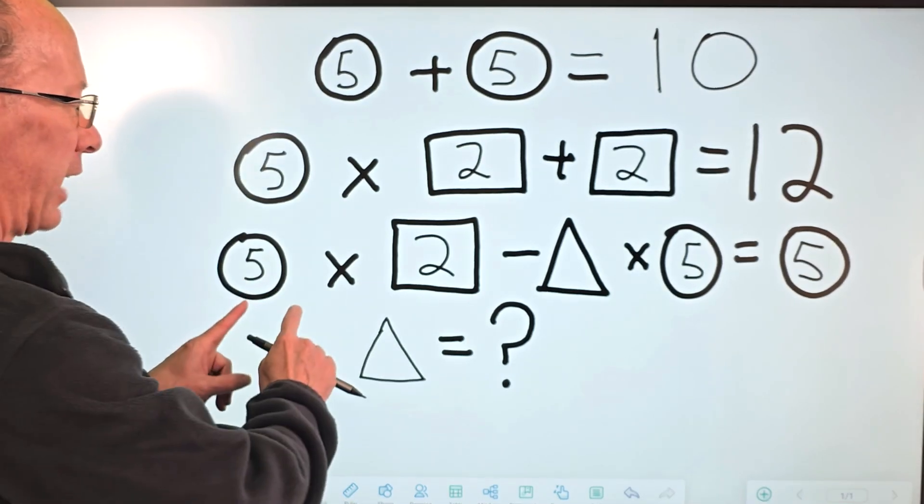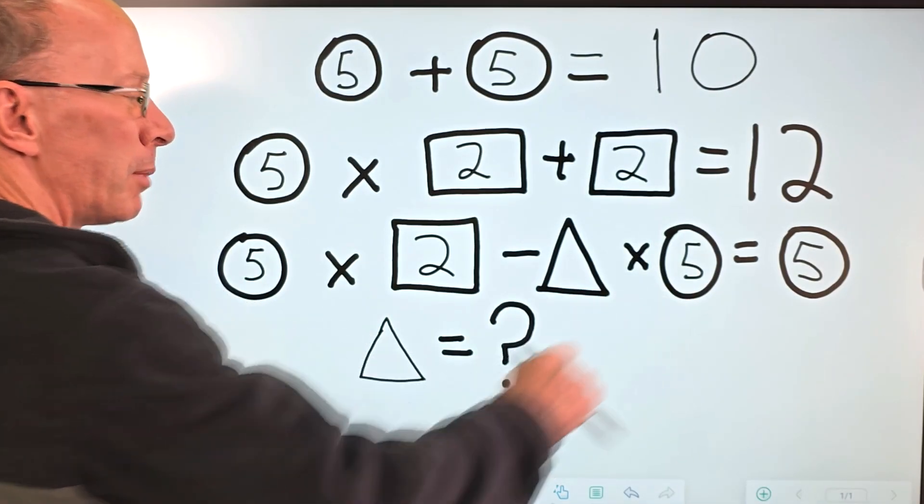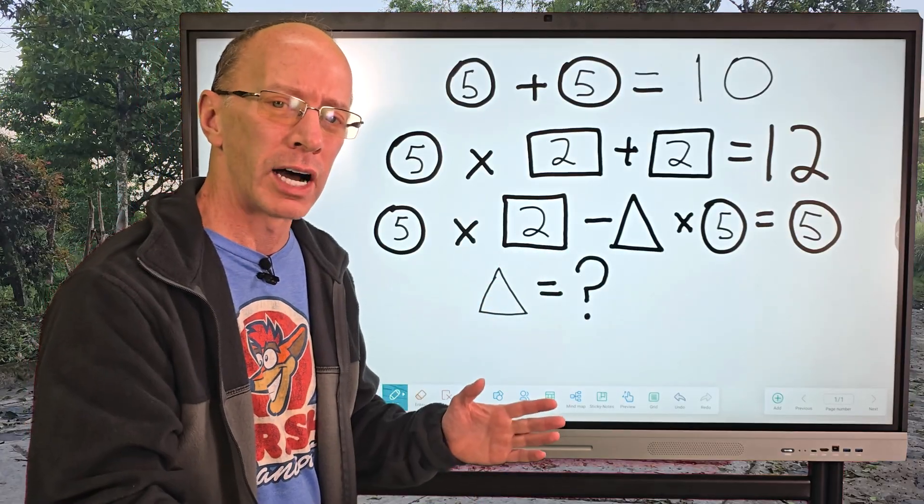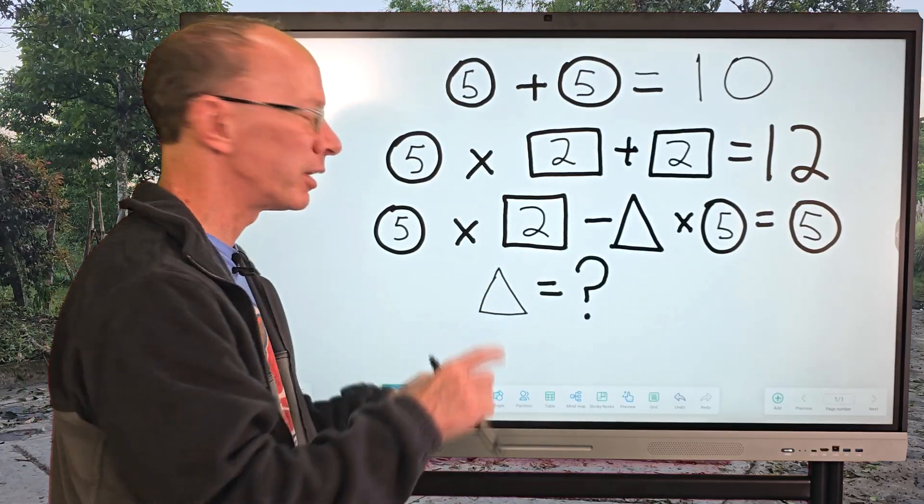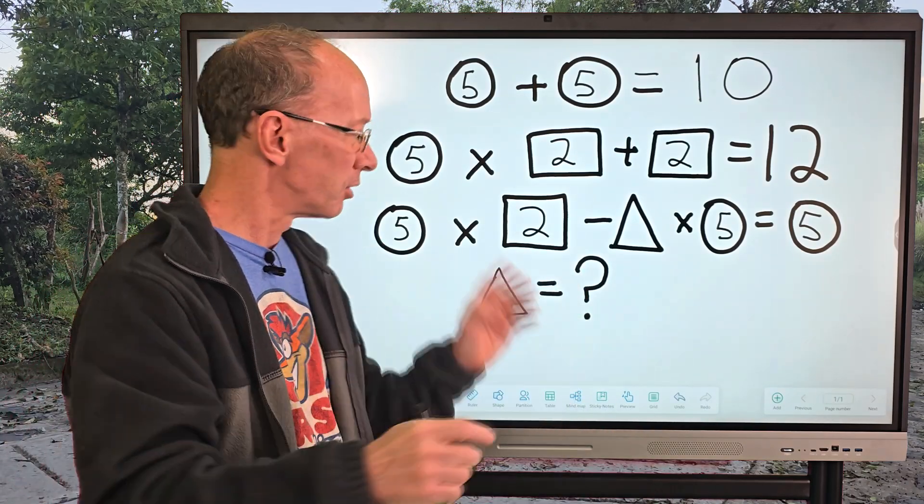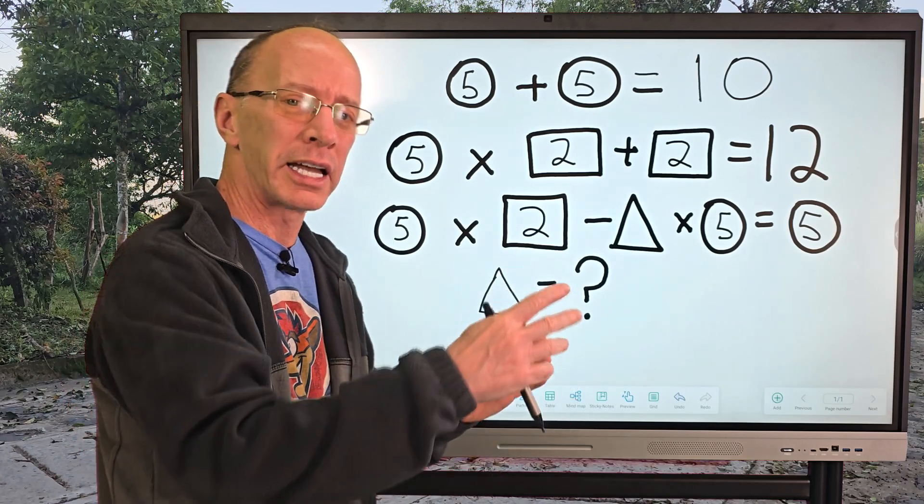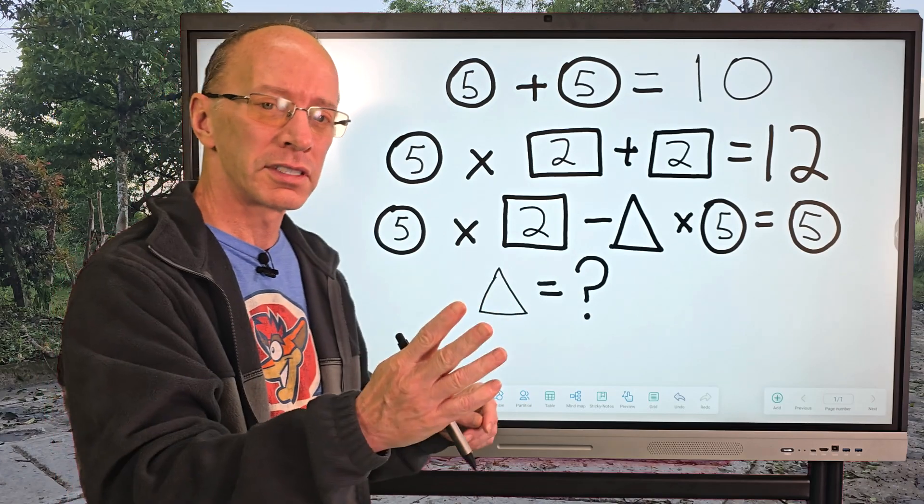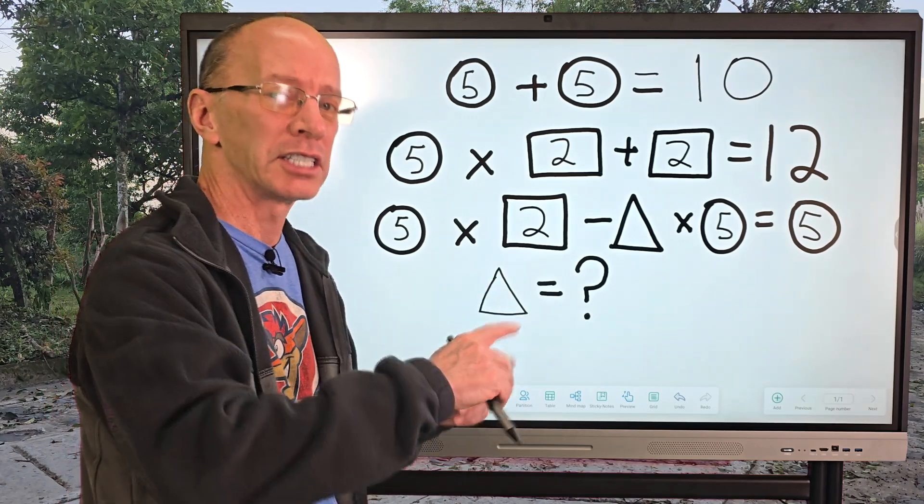All right, let's go ahead and take a look at the third line right here. Remember when we're doing problems like this, this is called order of operation. When you do order of operation, do what's inside parentheses first. There are no parentheses. Then you do exponents. There are no exponents. And then you do multiplication and division from left to right. That's what we have here.